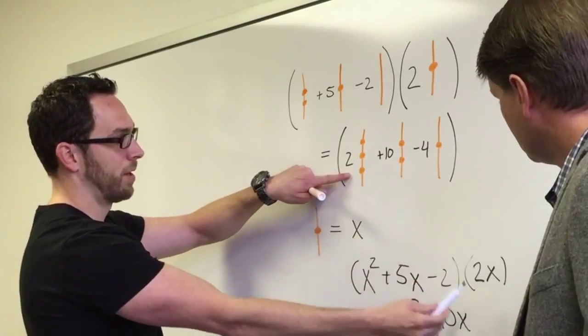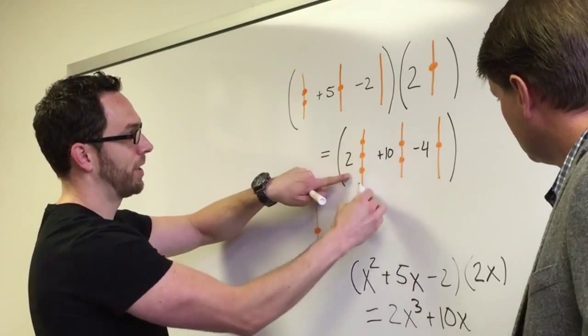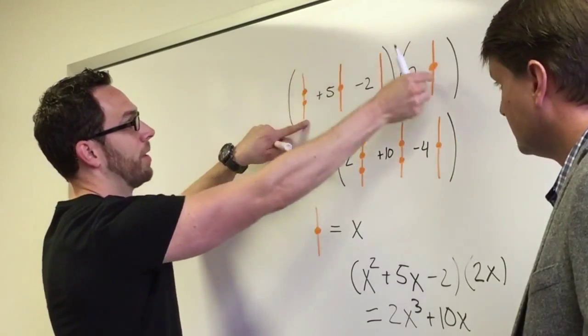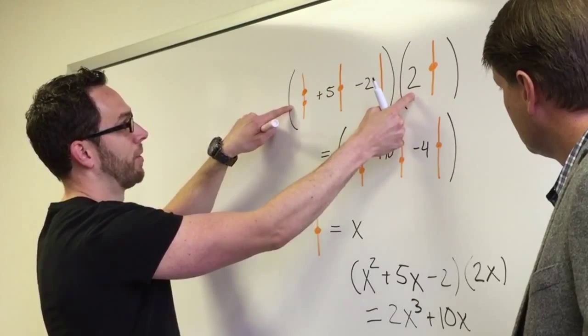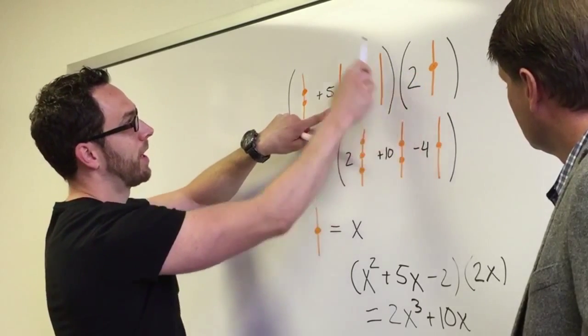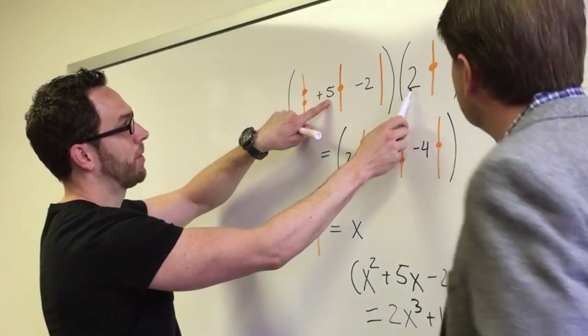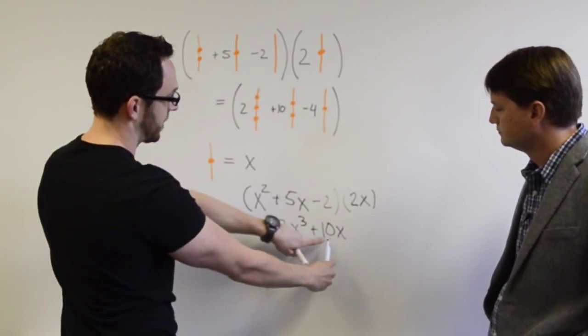you get 2x cubed plus 10x. And if you watch with the pictures, when I multiply this by this, I got three dots. In terms of pictures, all I did was stack this one on top and multiply the coefficients. So for the second one, I took this dot, I stacked it on top, and got 2. And my coefficient here was 2, and my coefficient here was 5, so I multiplied those together.